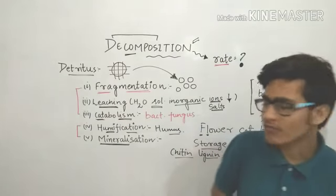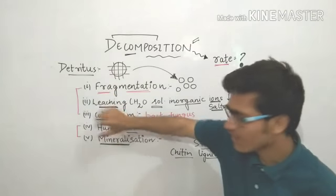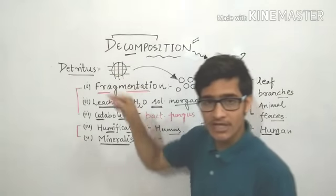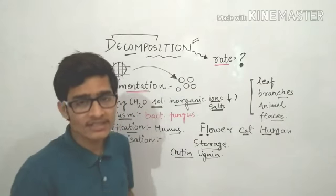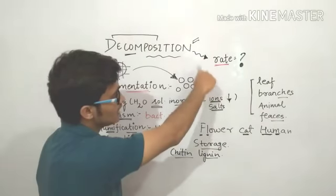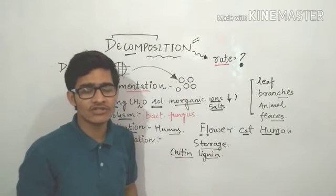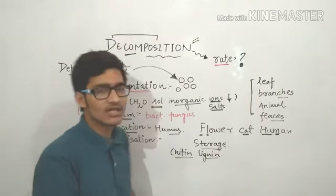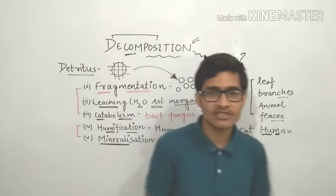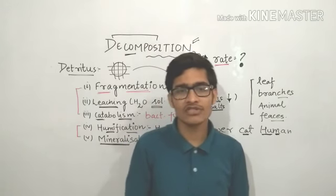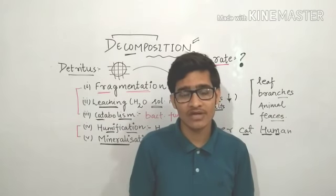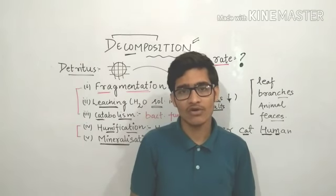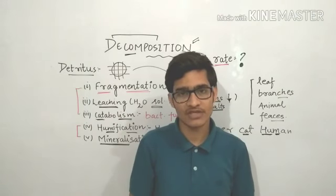This topic is quite important from an examination point of view. All five things — Flower Cat Human — are quite important. The definitions of decomposition and leaching are also very important, as well as the factors that influence the rate of decomposition. I hope today's lecture was understandable. If you liked it, please hit the like button, subscribe if you're new, and share this video with your friends. Thank you so much.